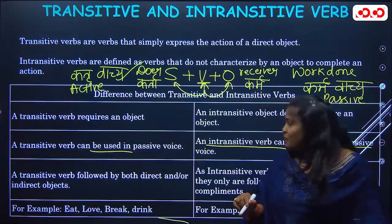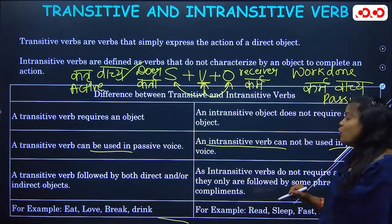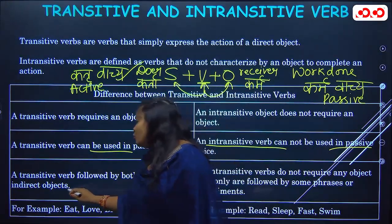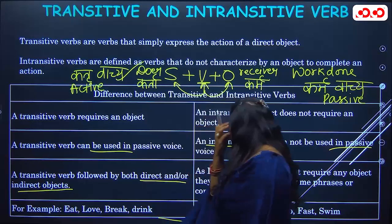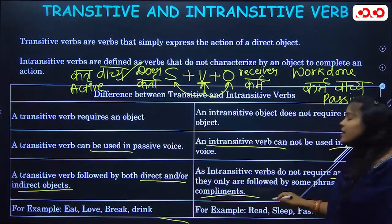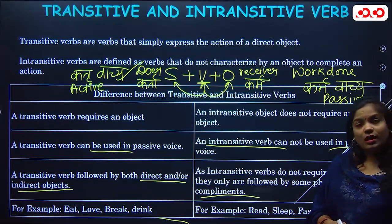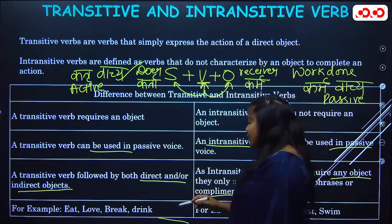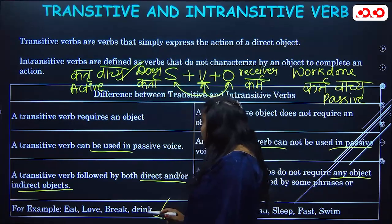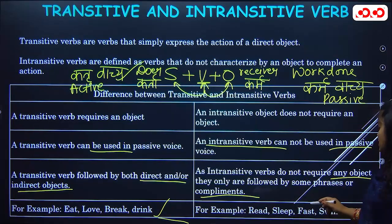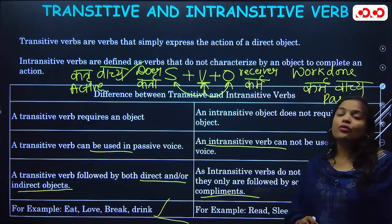A transitive verb can be followed by both direct and indirect objects. Intransitive verbs need no object — phrases or complements can follow them. For example, eat, laugh, break, drink — these are examples of transitive verbs. While read, sleep, fast, swim — these are examples of intransitive verbs.